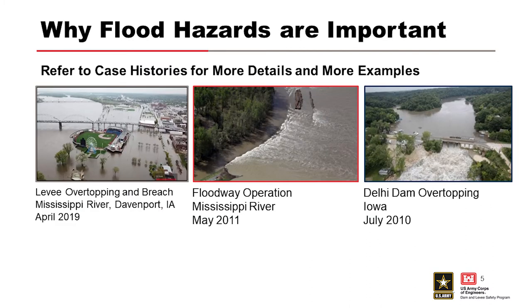Let's talk about a couple of case histories. We've got three examples of why flood hazards are important. On the left we have a levee overtopping and breach on the Mississippi River in Davenport, Iowa. In the center, we have floodway operation on the Mississippi River during the 2011 floods. On the right, we have overtopping of a dam in Iowa during July 2010 — we'll talk more about that one a little later.